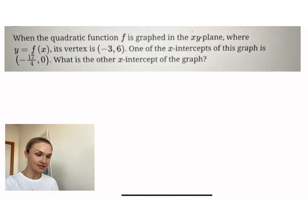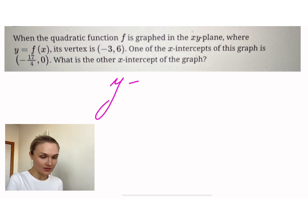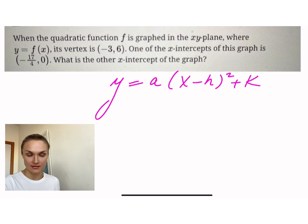First thing first, we know that this is a vertex form of a quadratic. What does that mean for us? That means we remember our y equals a(x minus h) squared plus k situation.